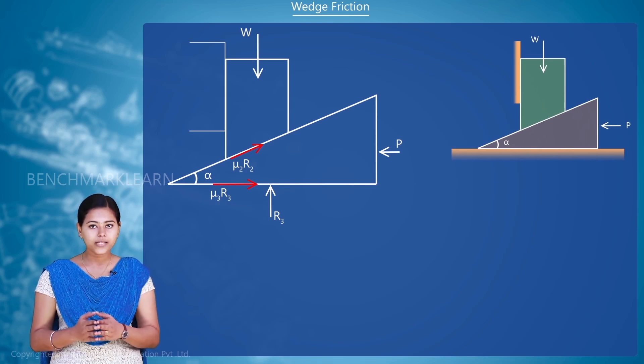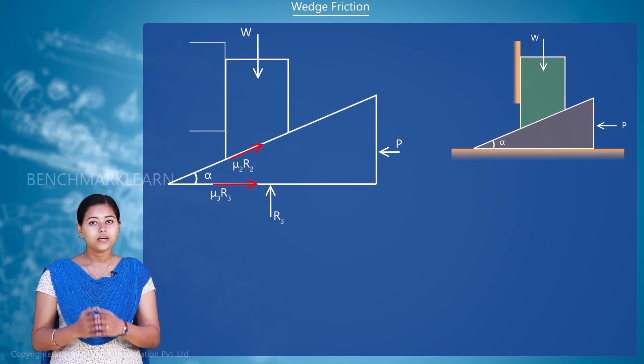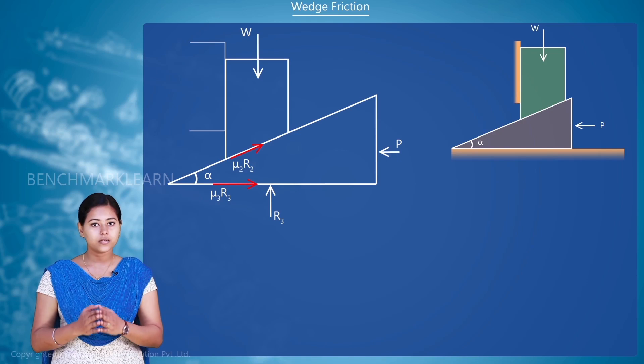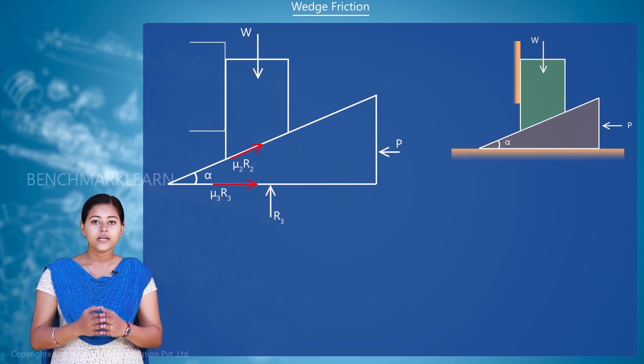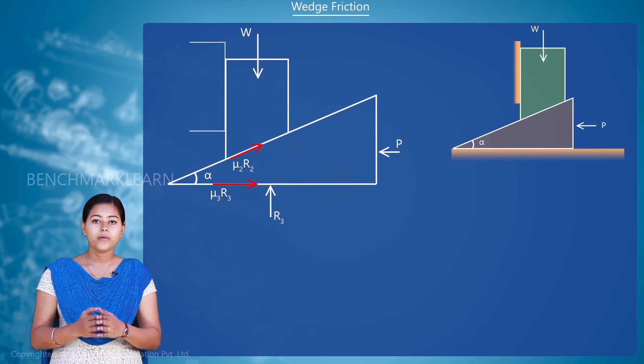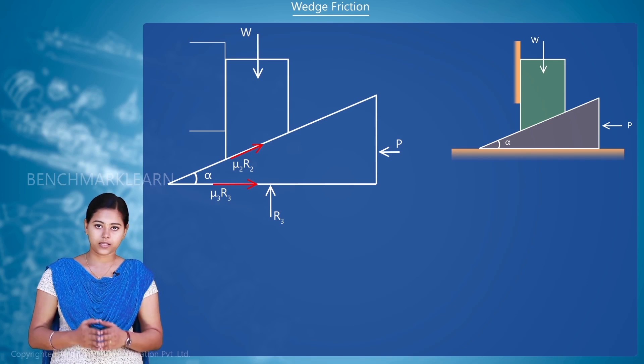When a wedge is placed on the ground, in order to lift an object, there will be a reaction acting on it by the ground which is R3. When it is pushed with a force P, a frictional force will be acting opposite to the direction of P, that is mu3R3.